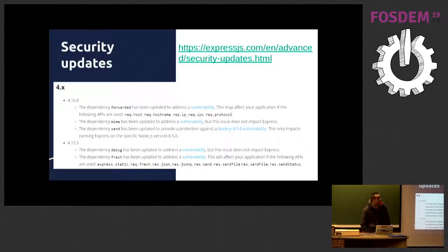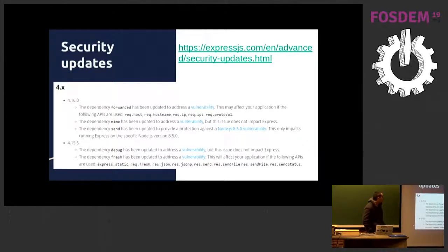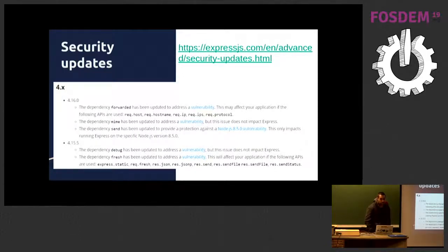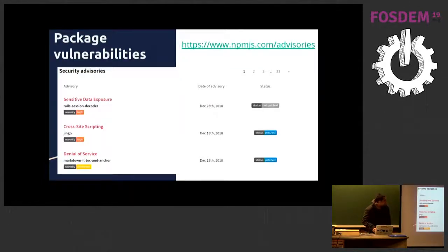From the security point of view, it is important to always use the last stable version of Node.js and Express, and to know the vulnerabilities published for them. On the Express.com site, we can find the security updates for this platform — for example, a list of Express vulnerabilities that have been fixed in a specific version. In the npm repository, we can also see the latest vulnerabilities discovered for specific packages and their level of criticality.